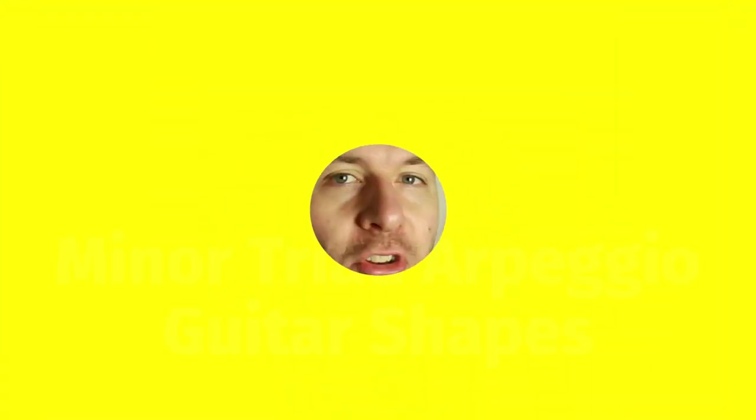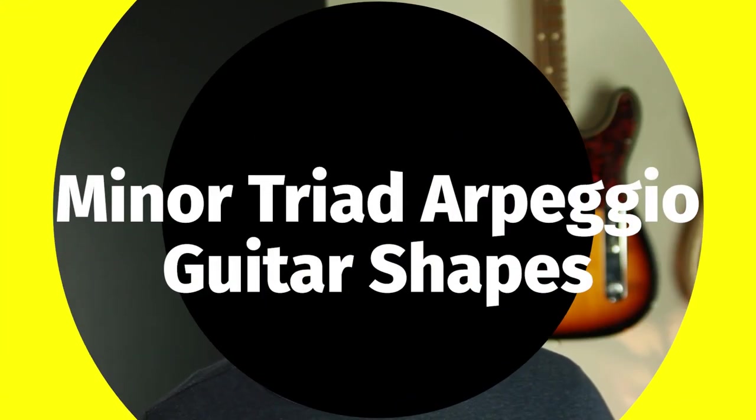This is the second video in a big series all about mapping out and practicing melodic arpeggio guitar shapes on the guitar so we can target chord tones when we're improvising over chord changes. The first step is just get the vocabulary down, be able to play them up and down, improvise with them a little bit individually.